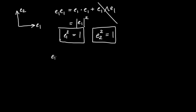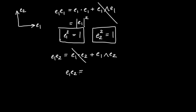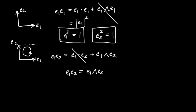Now what happens if we consider the geometric product E1 times E2? We have E1 dot E2 plus E1∧E2. Since we set these basis vectors up to be orthogonal, the dot product part vanishes. So E1 times E2 is exactly the bivector E1∧E2 — that oriented area. Visually, with E1 pointing right and E2 pointing up, the parallelogram has a counterclockwise circulation, and that bivector object is exactly equal to E1E2.